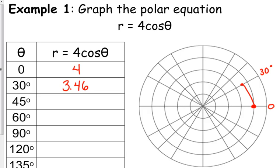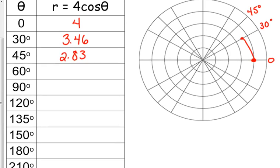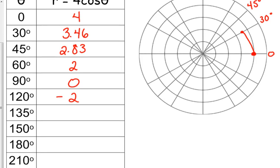Okay, 45 degrees, what is that value? Let me, 2.83. You know what, let's fill in the table, then we'll fill in the data. 60 degrees: 2. 90 degrees: 0. 120 degrees: Negative 2. 135: Negative 2.83. 150: Negative 3.46. How about 180? Negative 4. How about 210? Negative 3.46.